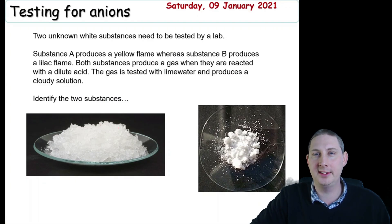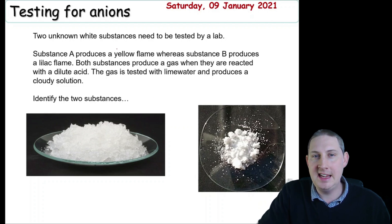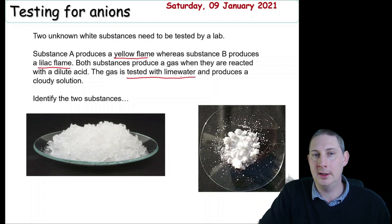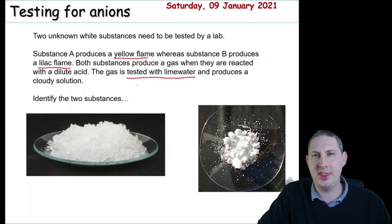Two unknown white substances need to be tested by a lab. Substance A produces a yellow flame, whereas substance B produces a lilac flame. Both substances produced a gas when reacted with dilute acid. The gas is tested with lime water and produces a cloudy solution. Identify the two substances.